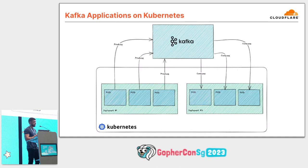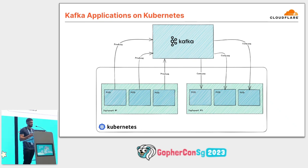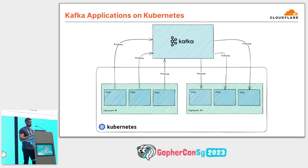At Cloudflare, we deploy our applications that use Kafka on Kubernetes, running both on bare metal along with things like our databases. Kubernetes is an open source platform for managing containerized workflows, and it's actually also written in Go. In Kubernetes, deployments are used to manage replica sets, which maintain a collection of replica pods. Pods are where we run our application containers and are the smallest deployments of compute in Kubernetes.